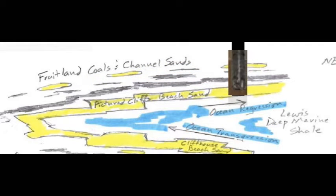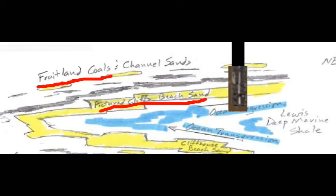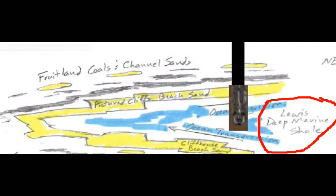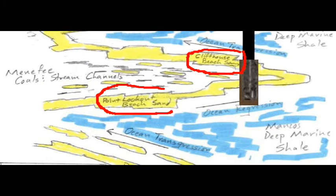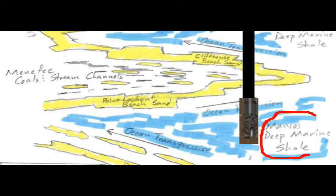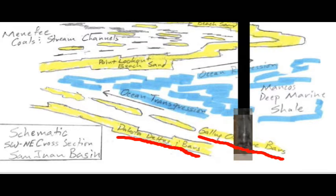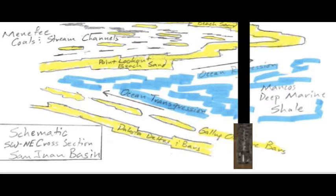Therefore, a well drilled in the center of the basin will go through the nearshore Fruitland Coals and Picture Cliff beach sand, through the deep ocean Lewis Shale, back through the Cliff House and Point Lookout beaches of the Mesa Verde group, back into the deep ocean Mancos Shale, and ultimately through the nearshore Gallup Bar sands and Dakota Delta sands, all of which are productive in different parts of the basin.